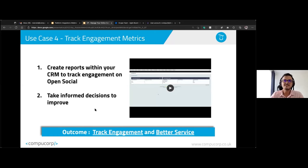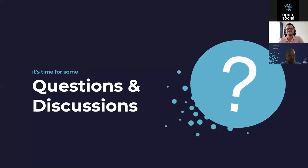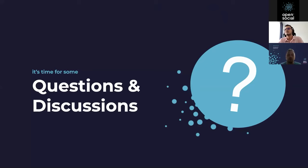Those were the four use cases. Of course there are many others, but those are what we wanted to show today. We work with Compu Corp as a partner, and with many other partners. You might wonder why we don't build certain things in-house at Open Social — it's because we like to work with people who have specific expertise and work with certain technologies daily. They know best how things need to be done and how they can work with Open Social, and as you can see, we made a good choice with Compu Corp.